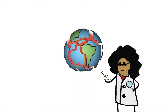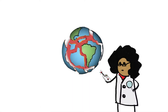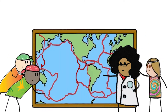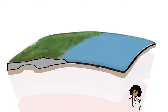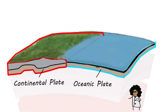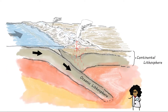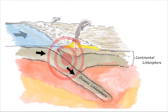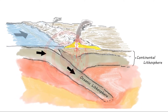In past episodes, we learned that plates are fragments of Earth's lithosphere, and there are two different kinds of plates: oceanic and continental. Plates move independently and interact to shape landscapes and cause earthquakes and volcanic eruptions.